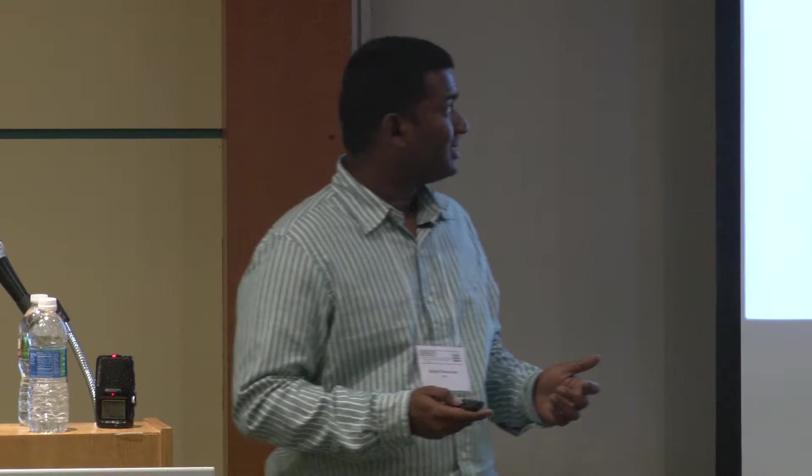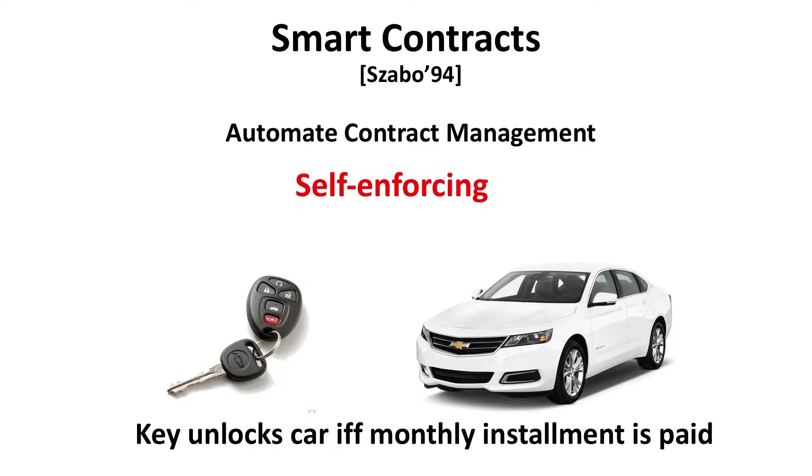What makes smart contracts really smart is that they have this self-enforcing property. If something screws up — maybe you pay the monthly installment on time but the key still doesn't work — then somehow the situation resolves automatically, in the sense that you don't have to go and contact some external dispute resolution mechanism or a code of law.